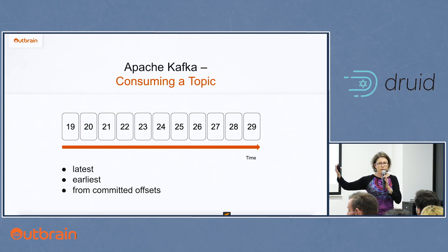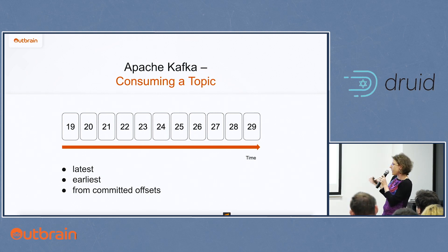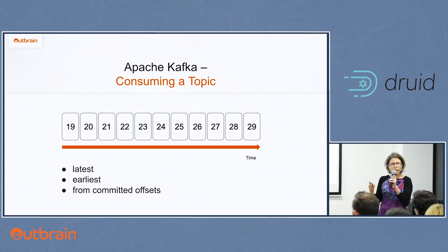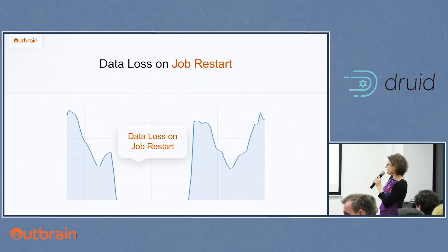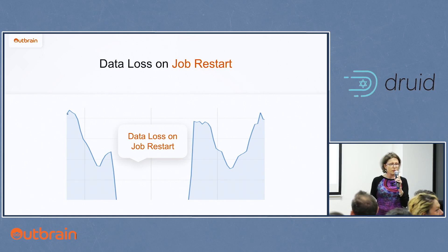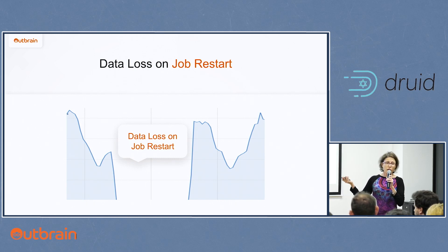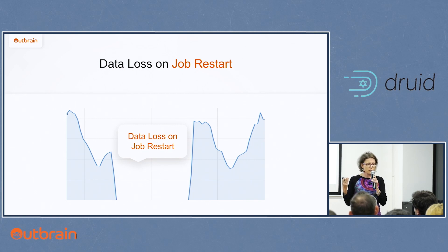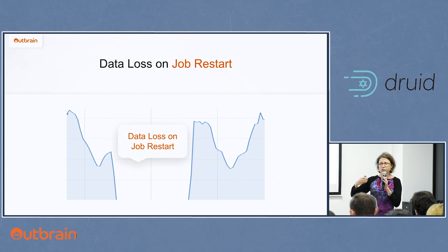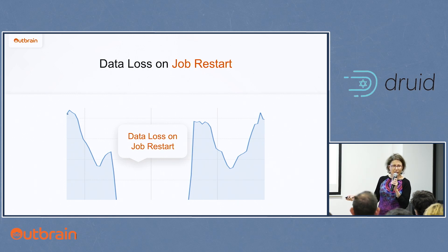You can specify that your application wants to consume from the earliest offsets — in that case it will consume the whole topic content. There is also a way to commit offsets and specify exactly from which offset to start consuming. The data loss happens because the default behavior is latest offsets, so when our Spark application is down, new events are added to Kafka, and after restart we consume from latest and lose those events. The straightforward fix seems to be: let's commit our offsets.